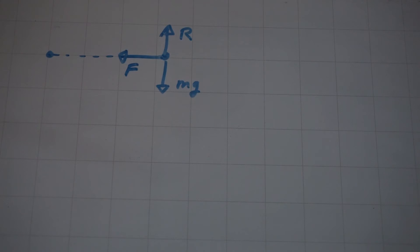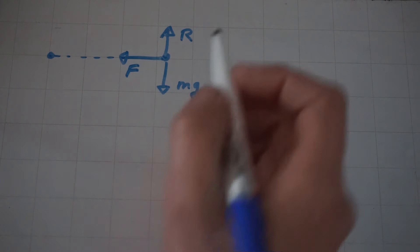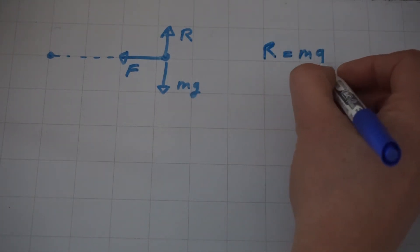We will consider the case when the coin is just about to slip, when the friction force is taking its maximum value. The vertical forces will be in balance, so R will be equal to mg.